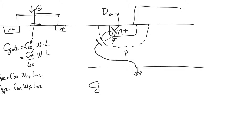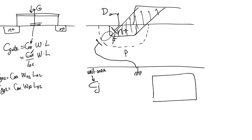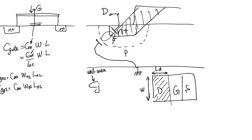C_j is the average capacitance per unit area, normalized because the drain area is a design parameter. In a top view, the drain area is W times L_drain, where L_drain is the length of the drain region — not L, the channel length, which is the distance between drain and source. Therefore, C_drain = C_j * W * L_drain. So C_DN1 = C_j * W_N1 * L_drain, and C_DP1 = C_j * W_P1 * L_drain.